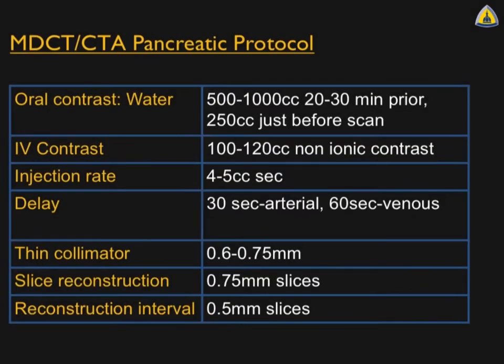Technique for the pancreas: water and IV contrast. Distend the stomach and proximal bowel with 1,000 cc, then inject 100 to 120 cc depending on patient size, ideally at 5 cc per second. Dedicated pancreatic studies require dual-phase imaging. If you're simply following a cystic lesion like an IPMN, perhaps you can get by with venous phase only.